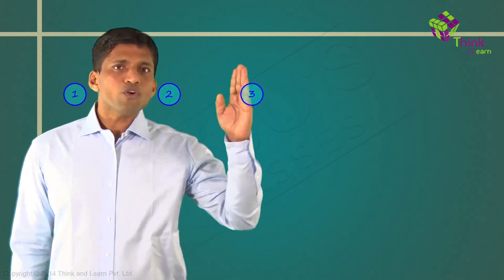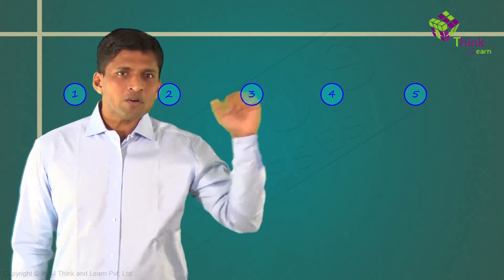Now let's understand geometry in a different but easier way. Geometry can also be taken as number patterns visualized in diagrams. Let me help you understand why. Starting with the basic number pattern — 1, 2, 3, 4, 5 — these are natural numbers.